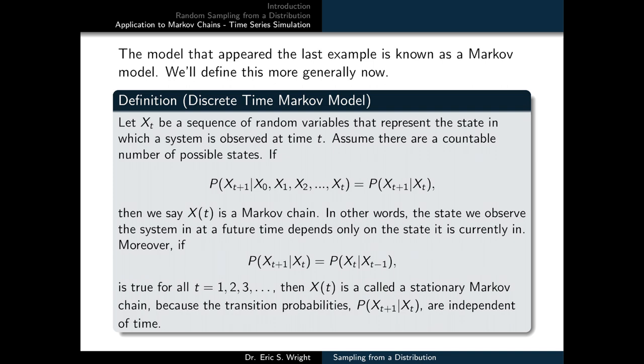Now for quite some time I've been throwing around terms like Markov chain and Markov model and it's really time that we have a careful formal definition for what that is. So what we're working with is known as a discrete time Markov model and I'm defining it here. Let x sub t be a sequence of random variables that represent the state in which a system is observed at time t. Assume that there are a countable number of possible states the system could be in. If the probability of the random variable x sub t plus 1 given x sub 0, x sub 1, x sub 2 all the way up through x sub t is just equal to the probability of x sub t plus 1 given x sub t then we say that x of t is a Markov chain. In other words the state we observe the system in at a future time depends only on the state it is currently in. So it's called the Markov property and it's one of the things that we need to have in place for our model to be a discrete time Markov model.